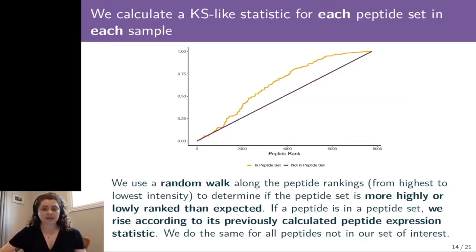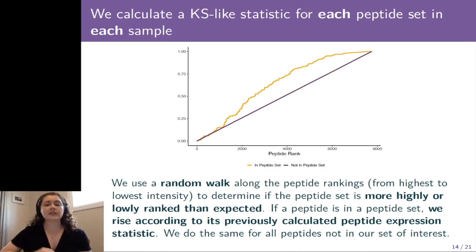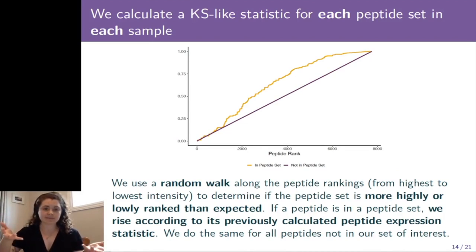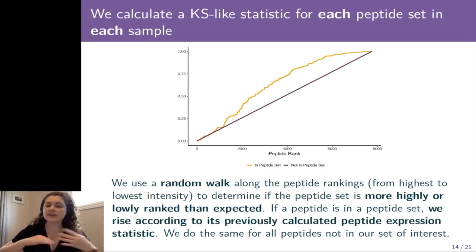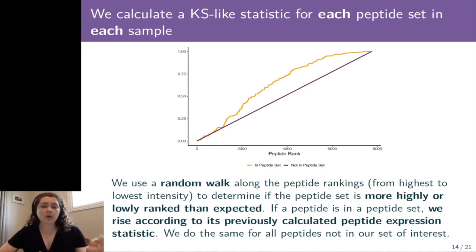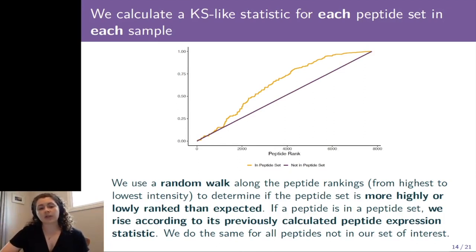After we've created these peptide sets, we calculate a KS-like statistic for each peptide set in each sample. We use a random walk along peptide rankings — going from highest to lowest intensity — to determine if a peptide set is more highly ranked or more lowly ranked than we expect. If a peptide is in a set, we rise according to a previously calculated peptide expression statistic specific to its sample. We do the same thing for all the peptides that are not in our set of interest. The orange line represents all peptides in a set of interest, and the purple line represents all peptides not in the set of interest, and we compare those two distributions.